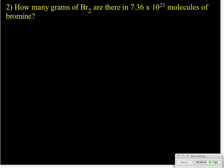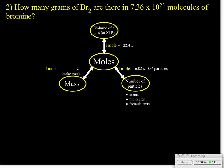The second question was, how many grams of bromine are there in 7.36 times 10 to the 23rd molecules of bromine? Again, we look at our mole highway roadmap and we are starting with a number of particles because our molecules are our number of particles. And we're trying to find the number of grams and we're trying to get to the mass.